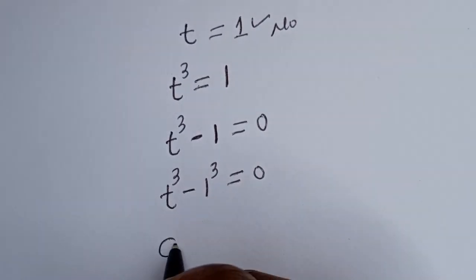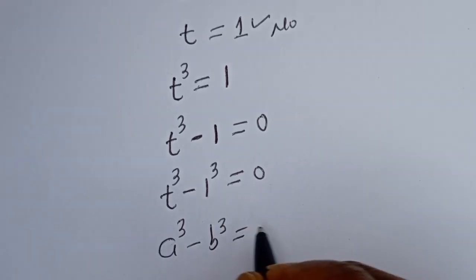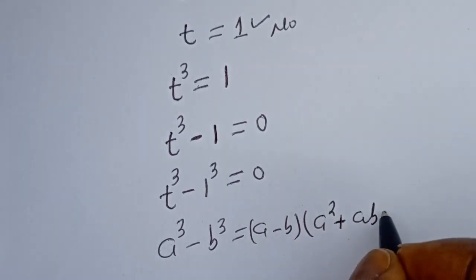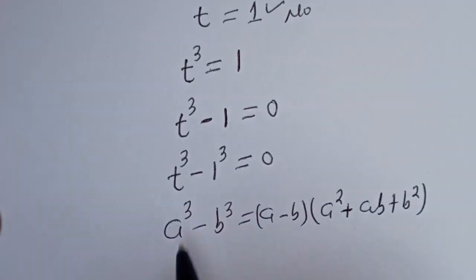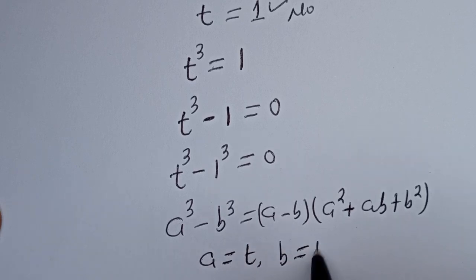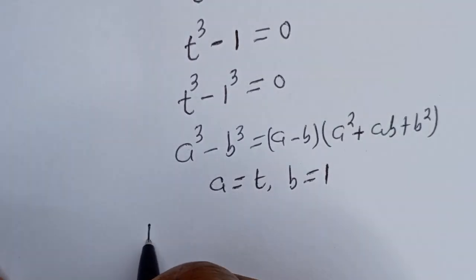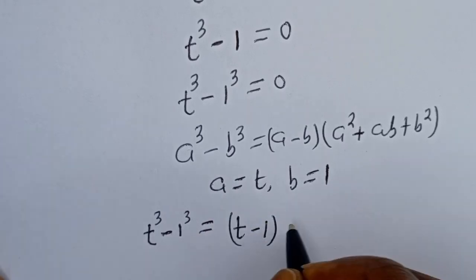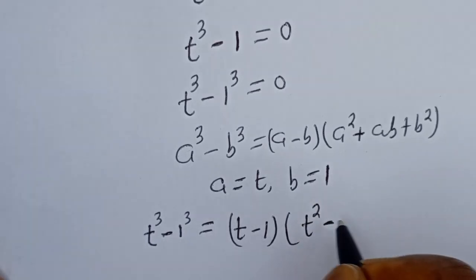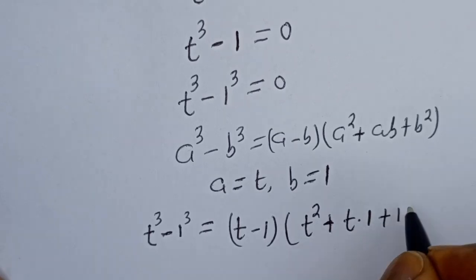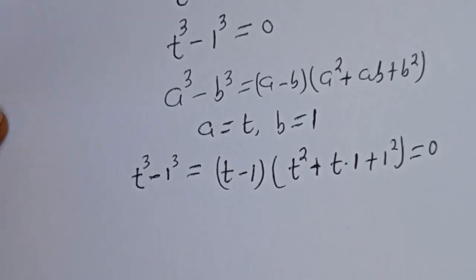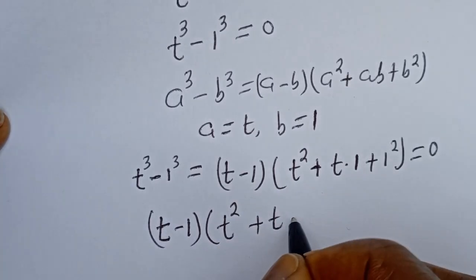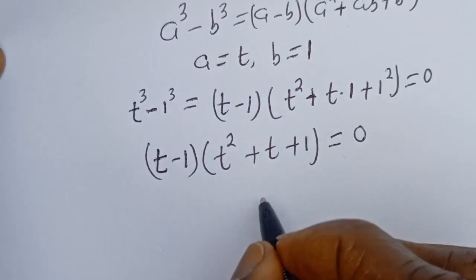Take note that if you have a³ minus b³, this is equal to (a minus b)(a² + ab + b²). In this equation, a equals t and b equals 1. Substituting, t³ minus 1³ equals (t minus 1)(t² + t·1 + 1²) equal to 0, which gives (t minus 1)(t² + t + 1) = 0.